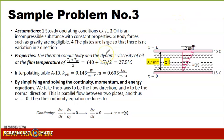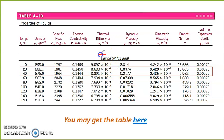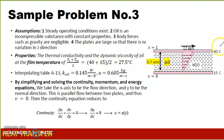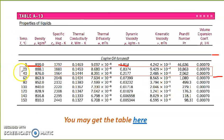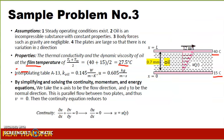For the properties of oil, we look at the engine oil table. We are given temperatures of 40 and 15 degrees Celsius, so we first calculate the film temperature as the average: 27.5 degrees Celsius. Since 27.5 is between 20 and 40 in the table, we interpolate and arrive at a thermal conductivity k of 0.145 and a dynamic viscosity mu of 0.605.